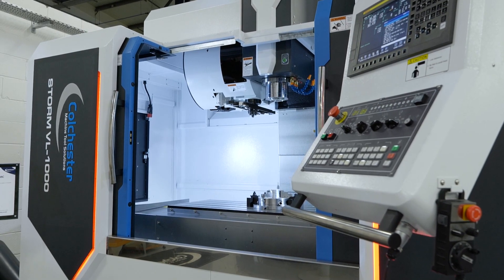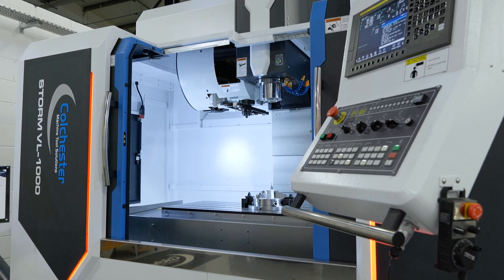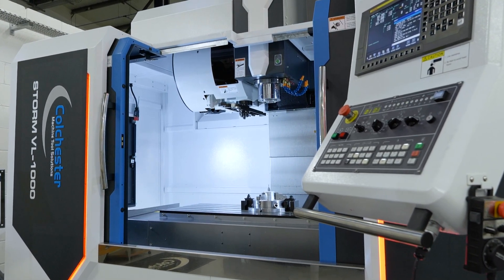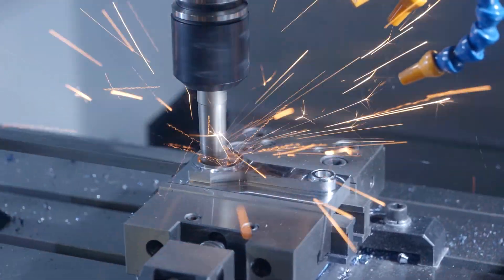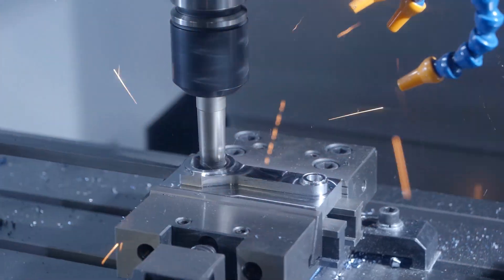So this spec machine is a linear way. Do you have any other options for that? Yes, this is the VL with linear ways, as you say. We do the VH, which has got hardened and ground bedways as well. So slightly heavier duty, some heavier milling capacity. This is really good as it is. It's a very modern capable machine.